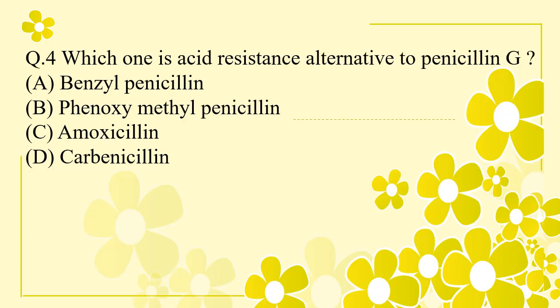Question 4: Which one is the acid-resistant alternative to penicillin G? Option A: benzyl penicillin. Option B: phenoxymethyl penicillin. Option C: amoxicillin. Option D: carbenicillin. The right answer is phenoxymethyl penicillin. Phenoxymethyl penicillin is the acid-resistant alternative to penicillin G.